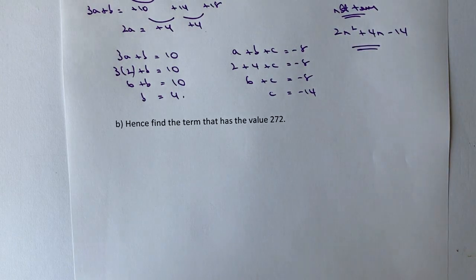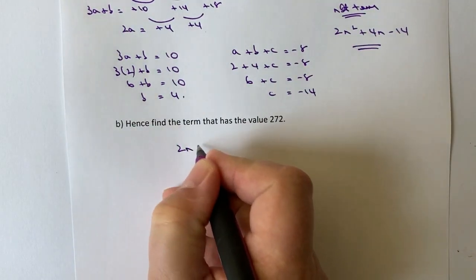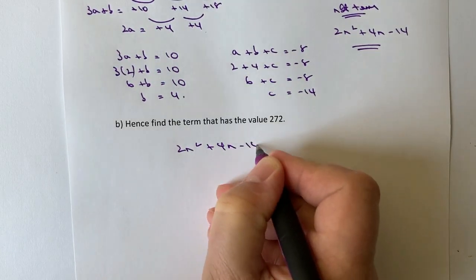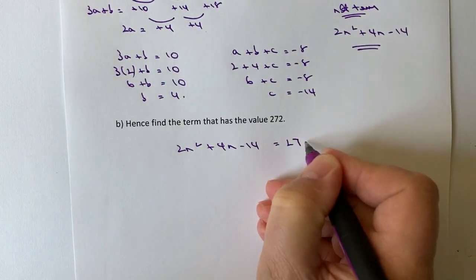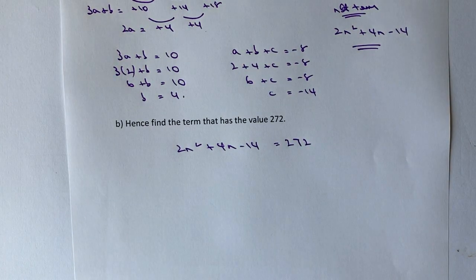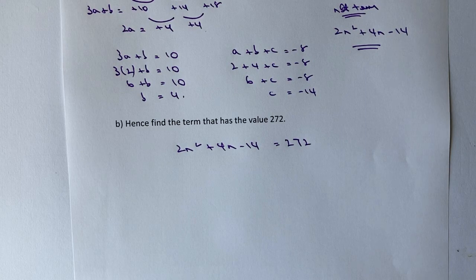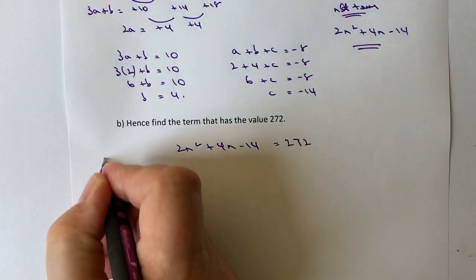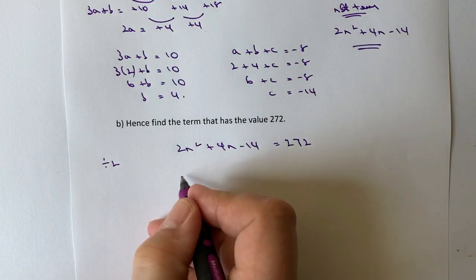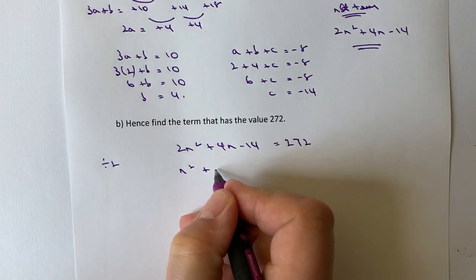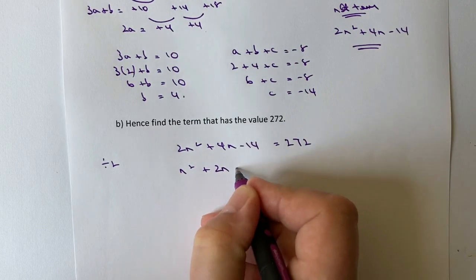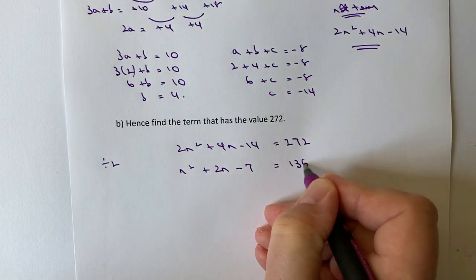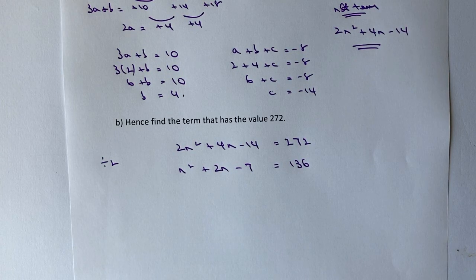So it's going to be 2n² plus 4n minus 14 equals 272, and then basically our job is to solve that and find the value of n. In order to find the value of n, what I'm going to do first is all of the numbers are even numbers, so I'm going to divide everything through by 2, because if I divide it all through by 2, it just might make my life a little bit easier, because the numbers will be a little bit smaller to deal with.